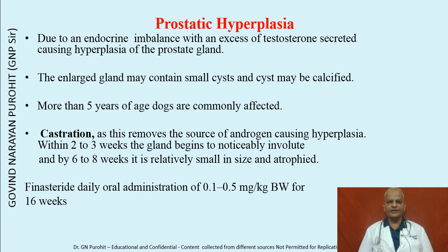Prostatic hyperplasia is an age-related disorder of the dog and humans, occurring due to an endocrine imbalance with excess testosterone secretion causing hyperplasia of the prostate gland. The enlarged gland may contain small cysts which may be calcified. It affects dogs more than five years of age. Treatment is castration, which removes the source of androgen; within two to three weeks the gland begins to involute, and by six to eight weeks it is relatively small. Prostatic hyperplasia may cause urinary incontinence in dogs.